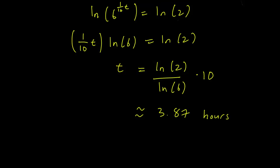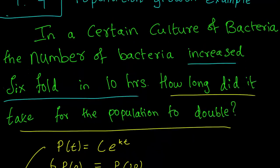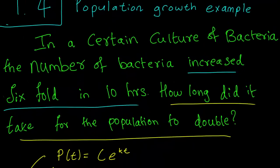So our guess is that the population doubles in 3.87 hours. Whenever you do a word problem like this, it's important to go back and think about whether your answer makes sense. We have 3.87 hours. And the question is that the population of bacteria increased by 6 times in 10 hours. And we are saying that it takes 3.87 hours for it to double. And just looking at that, it does seem to make sense that that would be a reasonable answer. So we conclude that, yes, our answer is 3.87 hours.